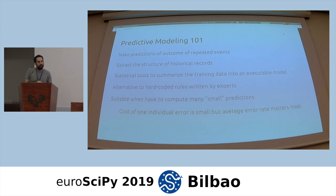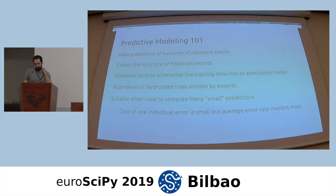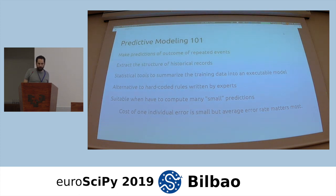Scikit-learn is a machine learning library. The goal is to make predictions on the outcome of repeated events by extracting the structure of the historical records collected in the database. We use statistical tools to summarize an aggregation of the training data and turn it into an executable model that you can deploy on other computers or mobile phones.